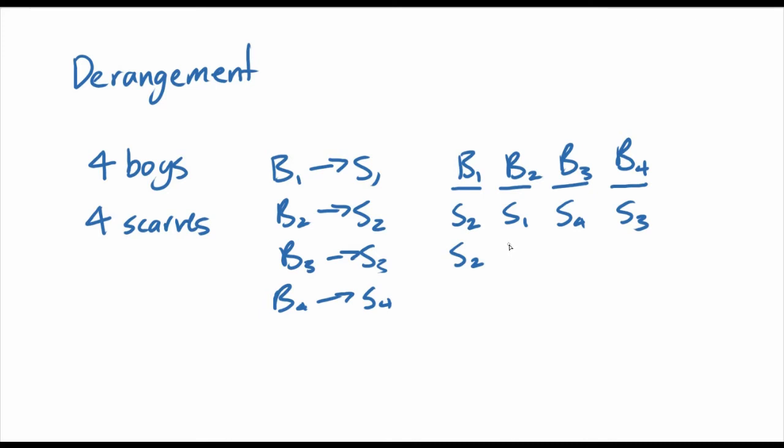So this is the only combination if boy one has scarf two and boy two has scarf one. What if boy two has scarf three? Well, if boy two has scarf three, then boy three can have scarf one, right? But that leaves boy four with scarf four, so it doesn't work. So this has to have scarf four, and this has to have scarf one. Okay, then scarf two, scarf four. We do the same thing. So boy three could have scarf one. Boy four could have scarf three. That seems to work out fine.